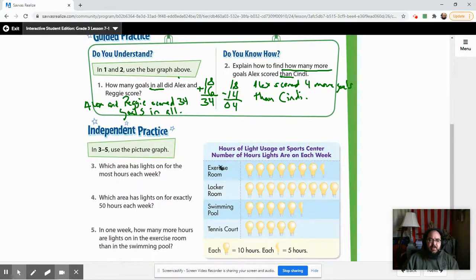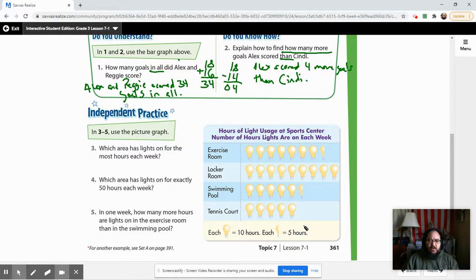Now let's take a look at our independent practice section down here. We've got a whole different grid and this would be a picture graph, a picture graph, okay? So in this case, we're not looking at bars, but you're going to notice that they look very similar to the bar graph, right? Except this time we've got a little key down at the bottom that shows us what each one of these symbols means, okay? So a full bulb means 10 hours. A half bulb means five hours. So you can see the differences here, okay?